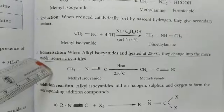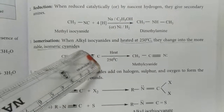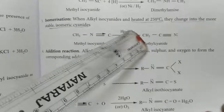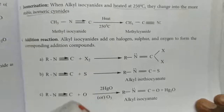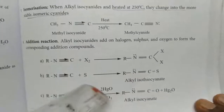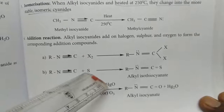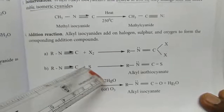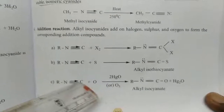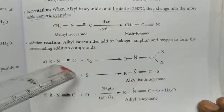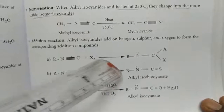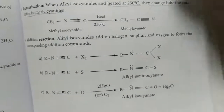Isomerization: when isocyanide is heated at 250 degrees Celsius, it isomerizes and converts into cyanide. Addition reaction: isocyanide undergoes addition reactions with halogens, sulfur, and oxygen. With sulfur, the product is isothiocyanide (R-N=C=S, where C is double-bonded to S). With oxygen, the product has C double-bonded to oxygen. 'Thio' represents sulfur. When treated with halogens, an addition product is formed.